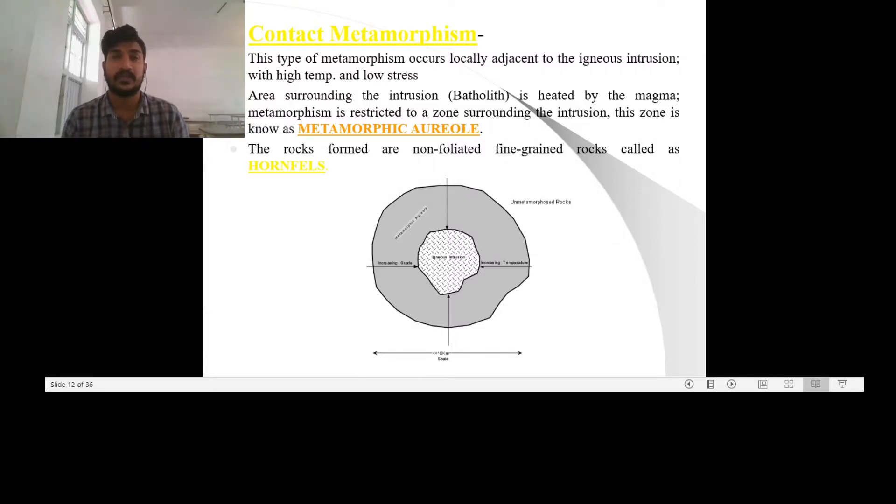Close to the igneous intrusion, it is known as a metasomatic aureole or a hydrothermal aureole where the hot fluids will have a greater chance for changing it to another rock.